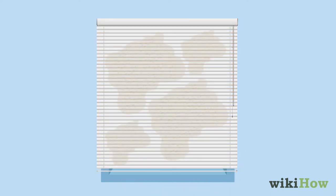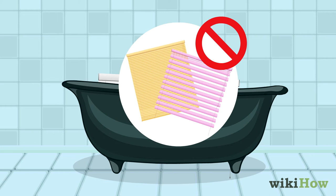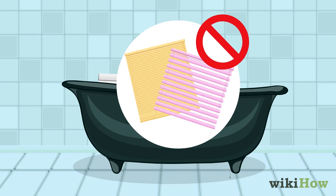If your blinds are really dirty, take them down and soak them in a bathtub filled with about 6 inches (15.24 cm) of water and 3-6 drops of dish soap. Just don't try this technique with wooden or fabric blinds, since soaking them would damage the material.